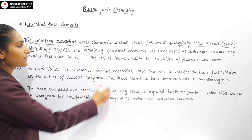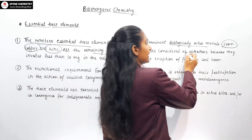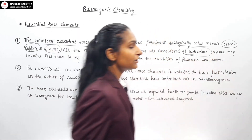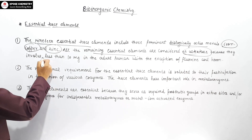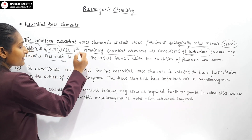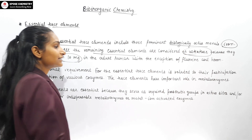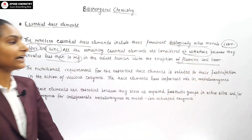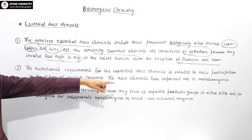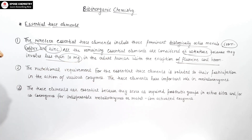The remaining essential elements are considered ultratrace. Why ultratrace? Because they involve less than 10 grams in an adult human, except fluorine and boron. These are less than 10 milligrams in the adult human.